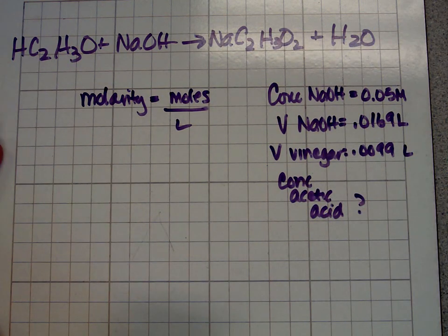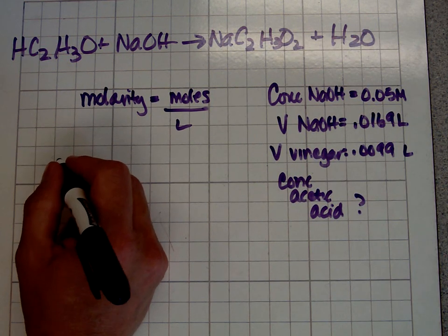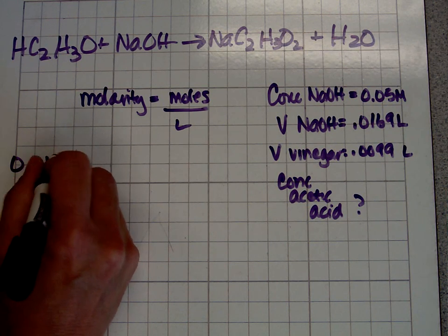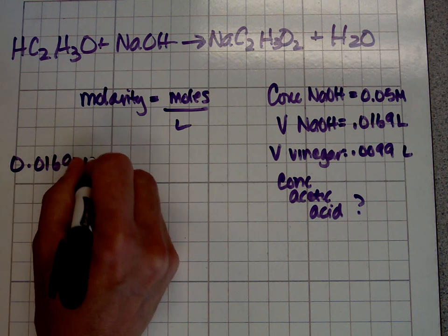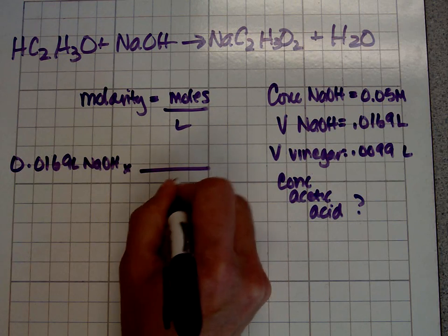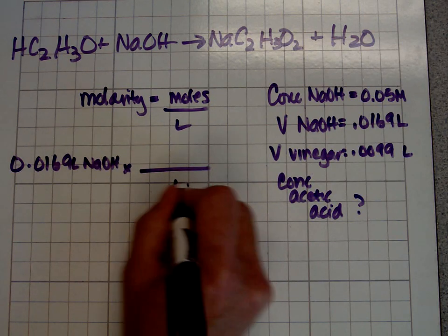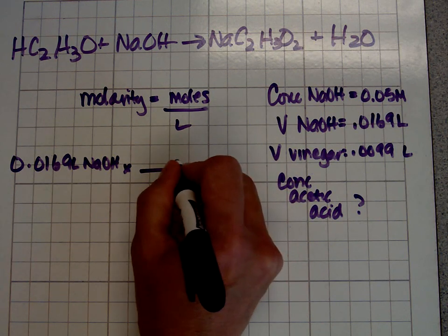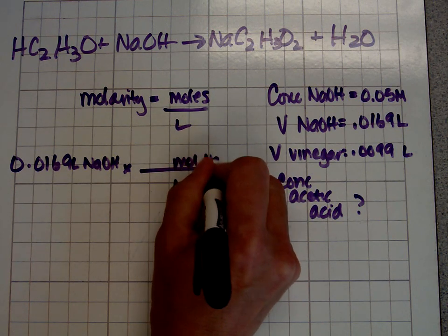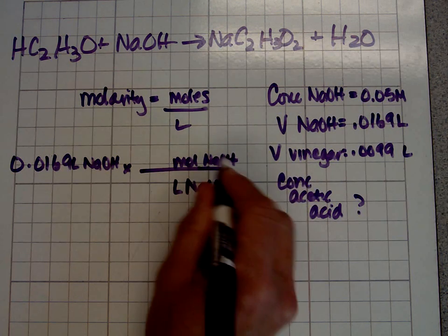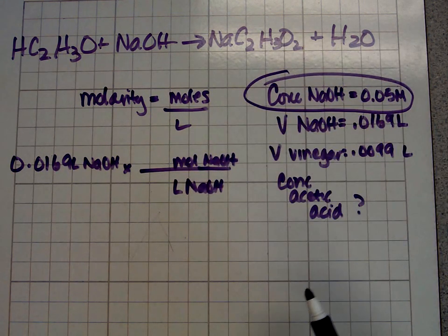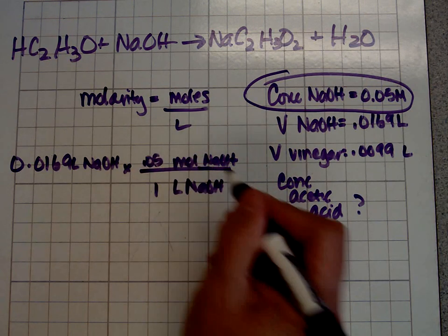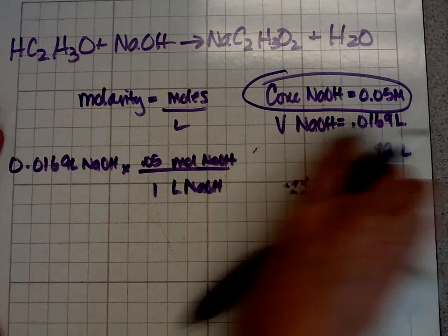So let's, like always, start with what we know. And what do we know? We know that we have 0.0169 liters of sodium hydroxide. We want to get rid of liters of sodium hydroxide and be left with moles of sodium hydroxide. Now, if you remember, we talked about molarity being moles per liter. So this number right here is going to tell you that in one liter you have 0.05 moles. Let me erase this so I have a little room to do some more work.